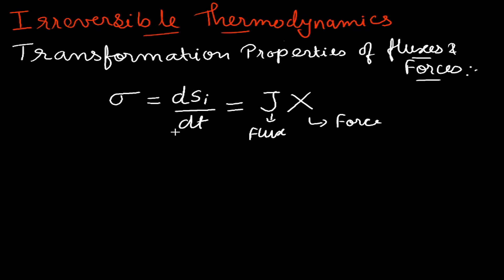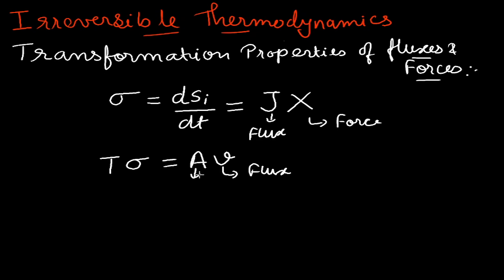Earlier, when discussing entropy production during a chemical reaction, we saw the expression: tσ = A·μ, where A is the chemical affinity and μ is the rate of the reaction. Here μ can be identified as the flux, and the chemical affinity is the driving force. We will use this relationship to show the transformation properties of fluxes and forces.